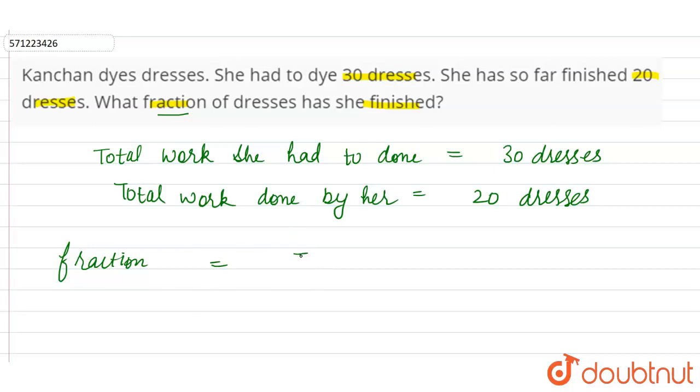That work done by her till now - total dresses she has made, she has made so far, divided by total dresses she has to make, right? Total work or total dresses...